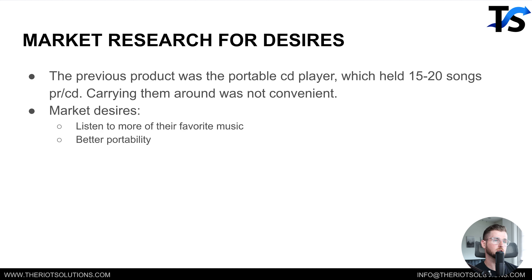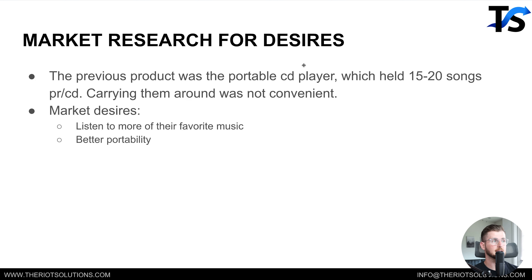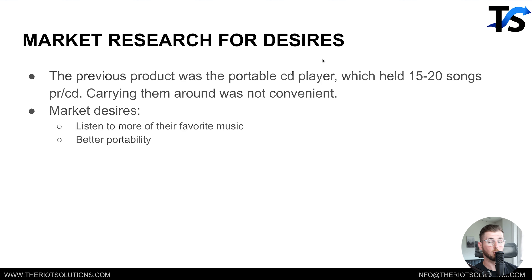Number one: you want to determine your desires across your market — your mass market desires. This is simply the things that people want, the wants of your market. The iPod is an evolution of a product — the CD player — so this is a level three market sophistication. What that means is there are other products out there that already solve this problem, so we have to introduce a new mechanism to give people hope again — basically a new product. Because the CD player is already a mass market thing, we simply looked at the desires people had around the CD player.